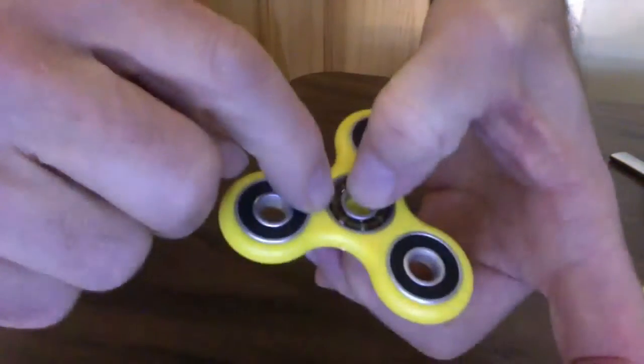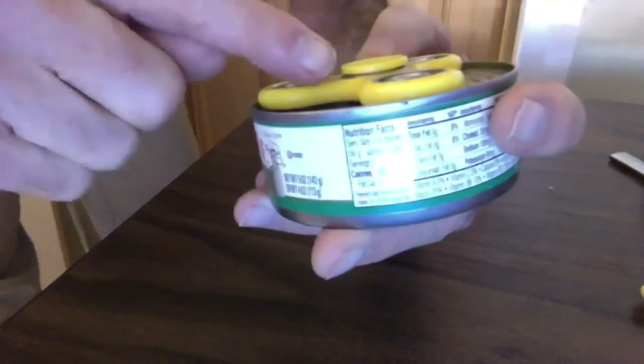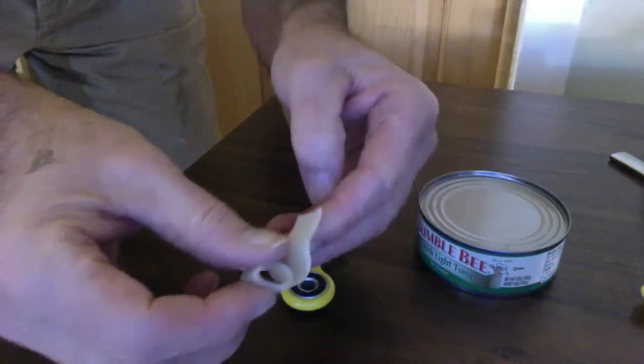What's nice about the tuna can is that the fidget spinner fits inside here pretty good. You need the cap up so that it can rest on the floor. I'm going to roll up a little tape.